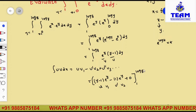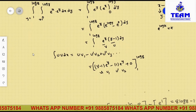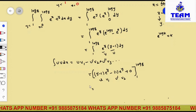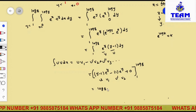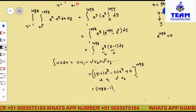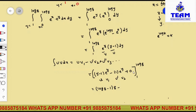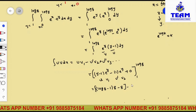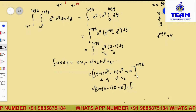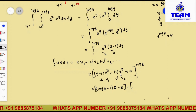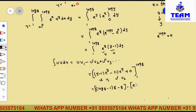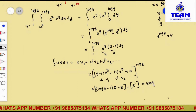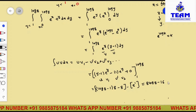Substituting the upper limit log 8: (log 8 minus 1)·e to the power of log 8 minus e to the power of log 8 = (log 8 minus 1)·8 minus 8. Substituting the lower limit 1: (1 minus 1)·e to the power of 1 minus e to the power of 1 = 0 minus e. Simplifying: 8·log 8 minus 8 minus 8 minus e = 8·log 8 minus 16 minus e. So the final answer is 8·log 8 minus 16 minus e.